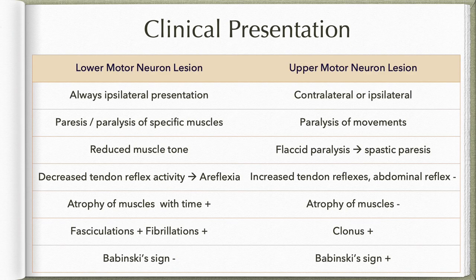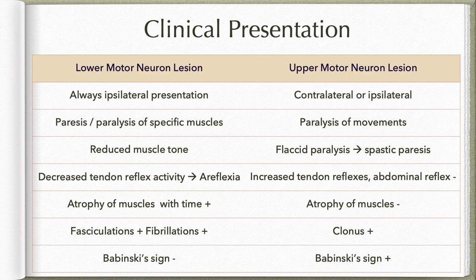In lower motor neuron lesion, the presentation is always ipsilateral. There is paresis or paralysis of specific muscles, muscle tone is reduced, and tendon reflex activity is decreased or almost absent, resulting in areflexia. With time, these muscles undergo atrophy. We can also observe fasciculations — spontaneous contraction of a small group of muscle fibers — and fibrillations, that is electrical activity in the paralyzed muscle during electromyography. Babinski sign is always negative.